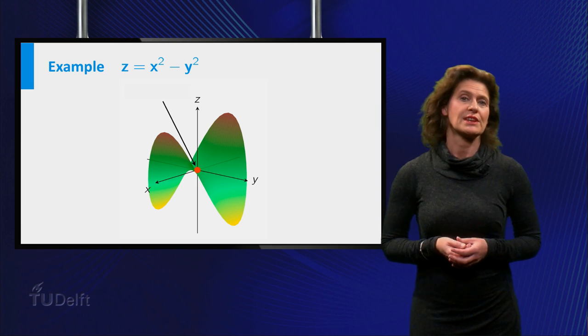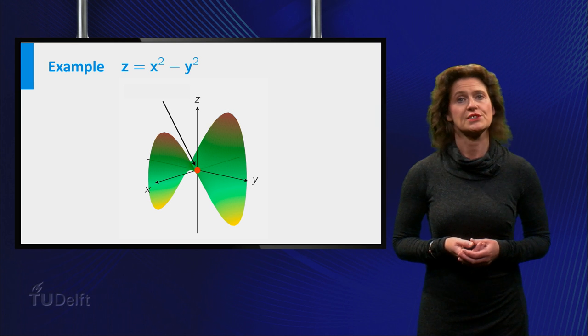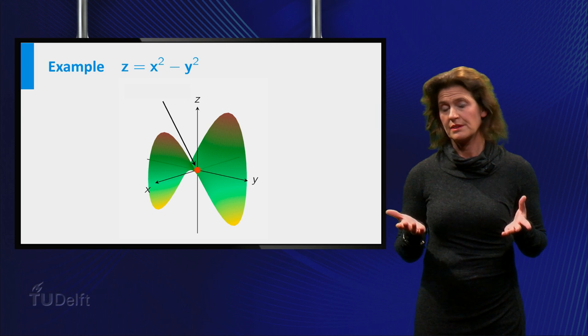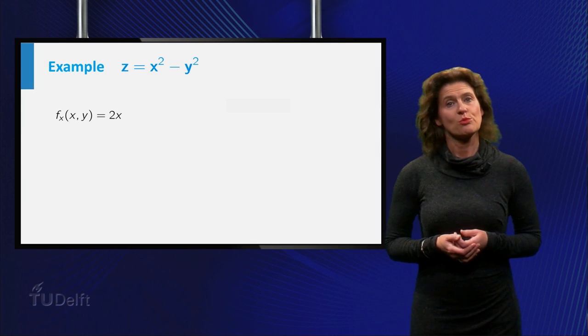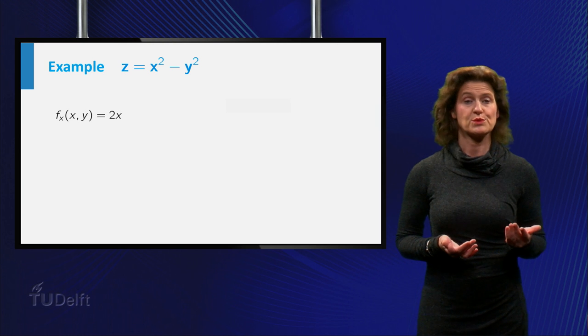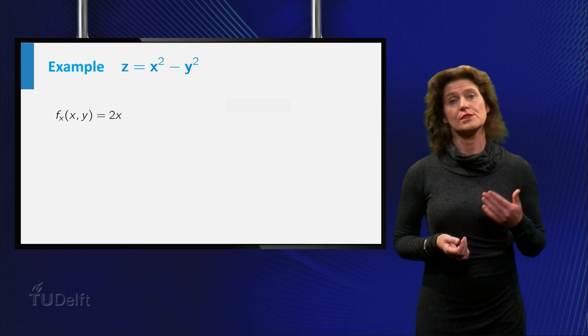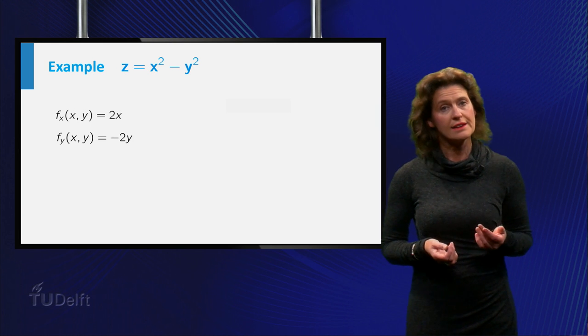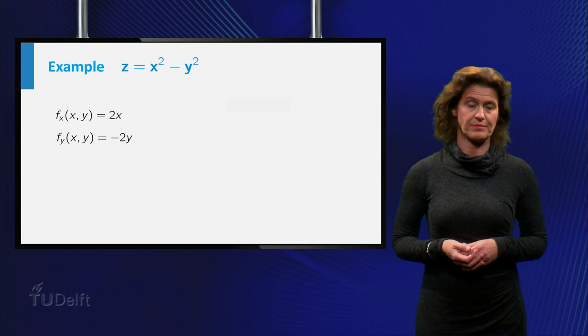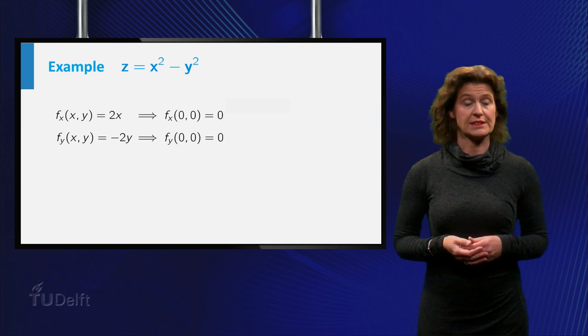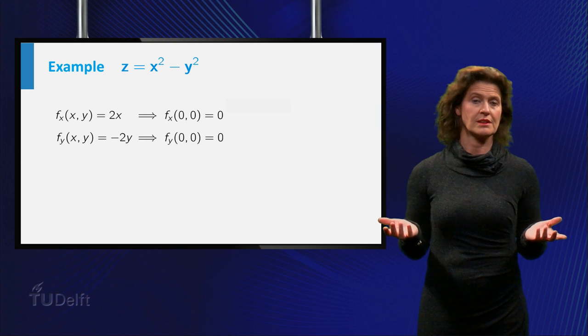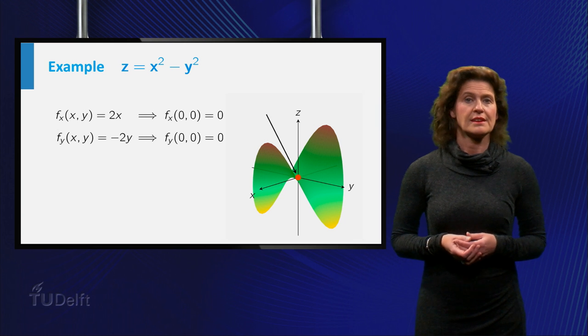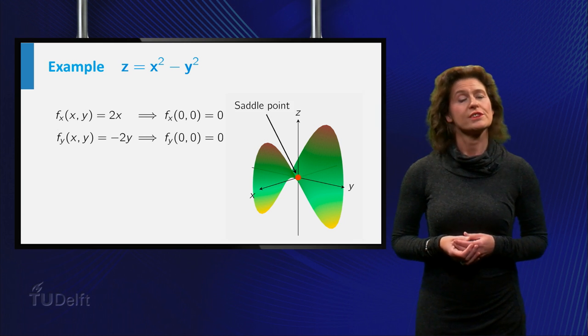Here is the graph of the function x squared minus y squared. The origin looks like a special point, though it is not a minimum nor a maximum. Let's compute the partial derivatives. The partial derivative with respect to x is equal to 2x, and the partial derivative with respect to y is equal to minus 2y. In the origin, their value is equal to 0, but the origin is obviously not an extreme point. This kind of point is called a saddle point.